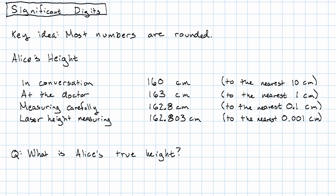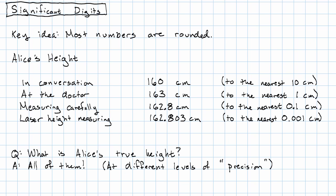So what's the actual value of Alice's height? In fact, Alice's true height is all of these things. All of these answers are reporting the same height but at different levels of precision. The precision of a number is a measure of how much information is conveyed, and there are two different ways to think about precision.